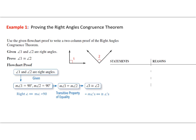In this lesson we want to get more familiar with our other two types of proofs, practicing going from one style of proof to a different style. Our objective is to learn the structure of proofs while also learning how to prove. Here we have proving the right angles congruence theorem: use the given flowchart proof to write a two-column proof. We're given that angle 1 and angle 2 are right angles, and we want to prove that angle 1 is congruent to angle 2.